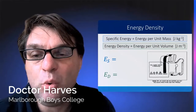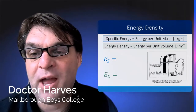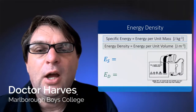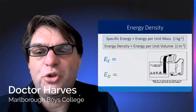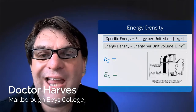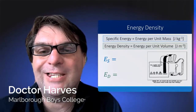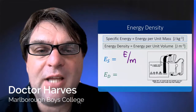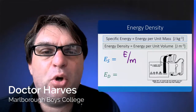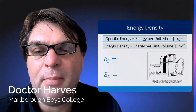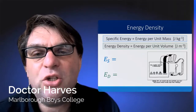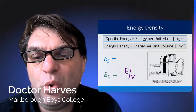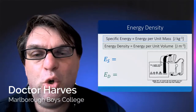In order to understand why nuclear power is so effective as a fuel, you need to understand concepts around specific energy and energy density. Specific energy is the energy released from a substance per unit mass, or joules per kilogram, whereas energy density is energy per unit volume, or joules per metres cubed.